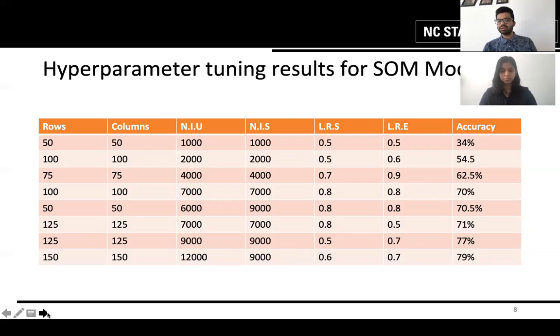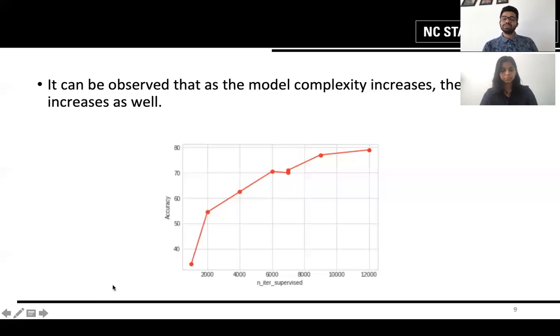LRS stands for learning rate, starting learning rate and LRE similarly as the ending learning rate. As you can see the accuracy increases as the complexity of the model increases generally which can be also observed using this specific graph. So we can see that accuracy increases as the number of iterations or overall the complexity of the model increases.